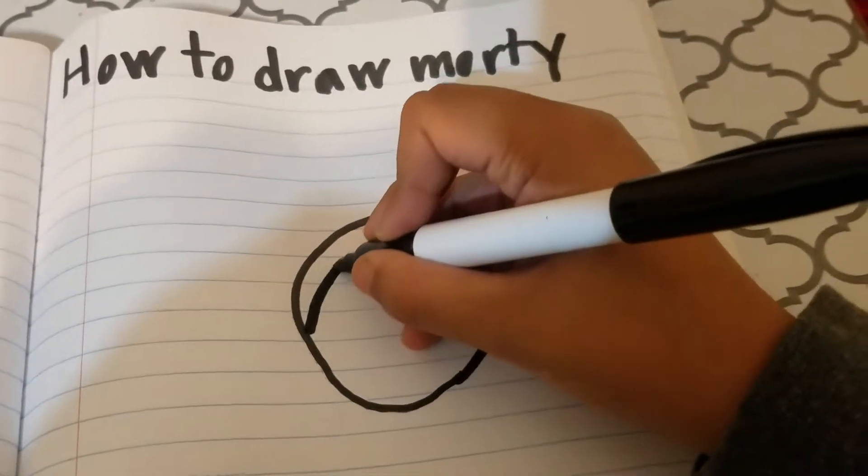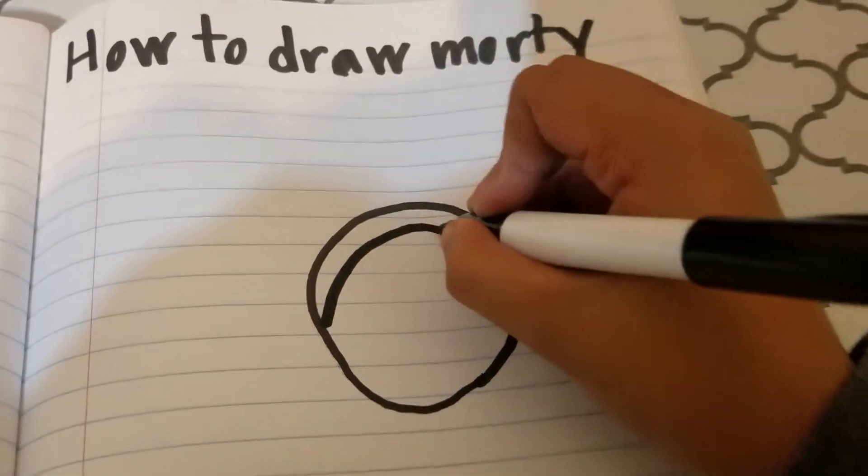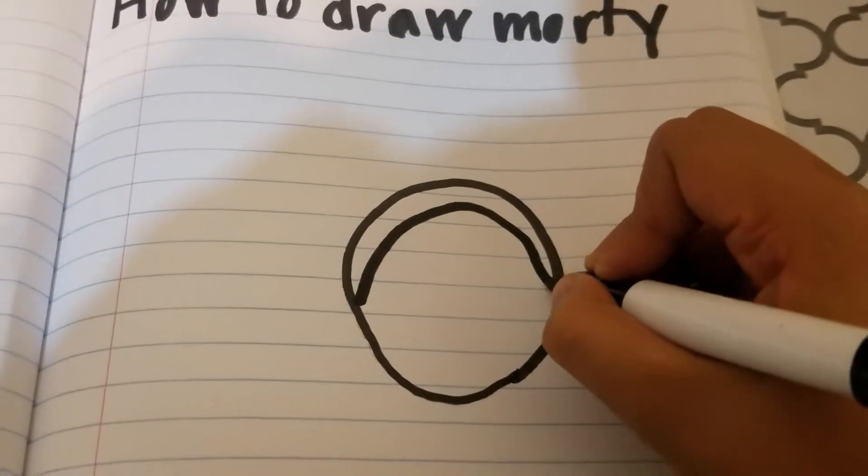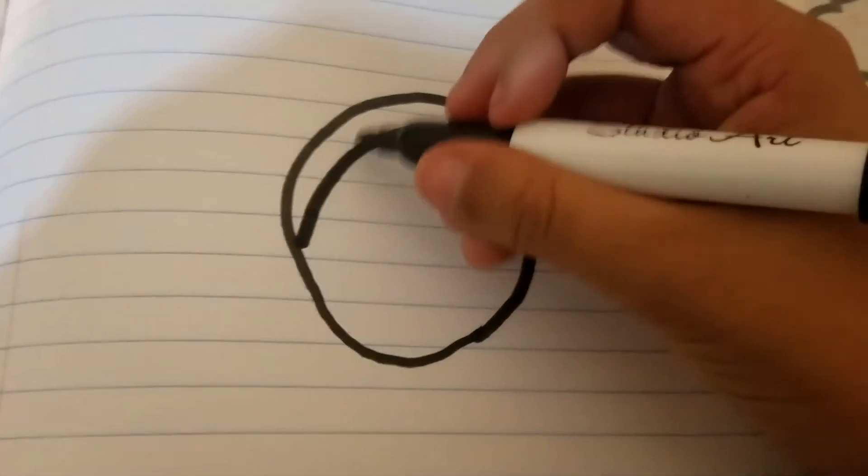Now, you're going to want to go around here. Make sure the line is short. That's going to be his hair.